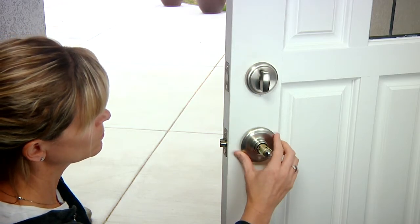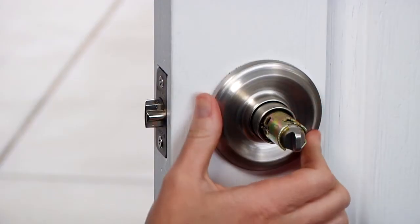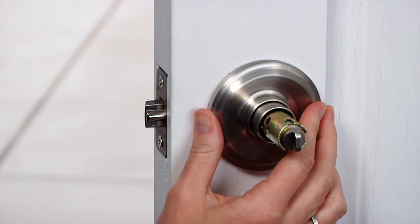Thread the outside rows onto the main lock body and rotate clockwise until it tightens snugly against the door face.